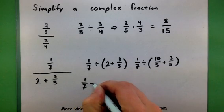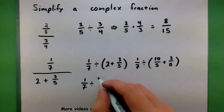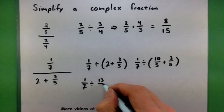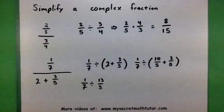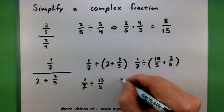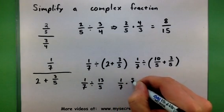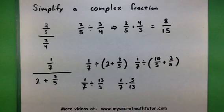This will turn into 1 seventh divided by 13 fifths. Perfect. Okay. Now that I have a fraction divided by a single fraction, let's go ahead and multiply by the reciprocal. So, 5 thirteenths. There we go.